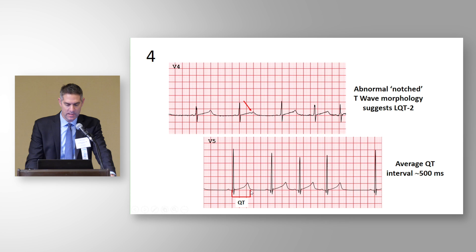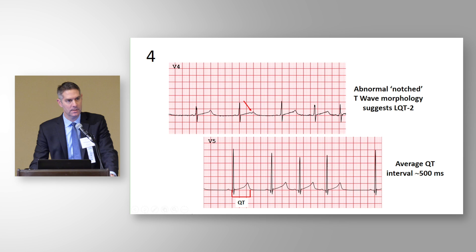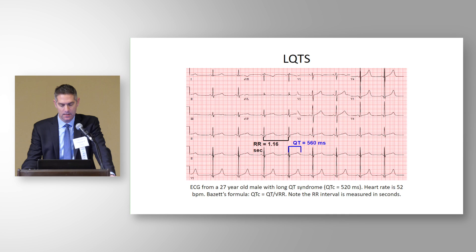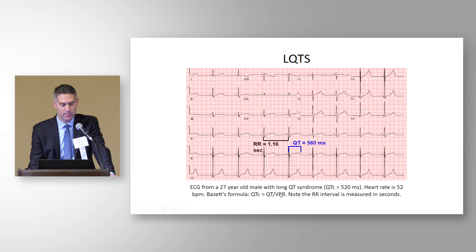In V5, finding that distinct end of the T wave to calculate the QT interval — from the beginning of the QRS to the end of the T wave — is challenging here because of the sinus arrhythmia, requiring averaging of both the RR intervals and QT intervals. Here's another example of Long QT syndrome, a 27-year-old with a QTc of about 520 milliseconds. The RR interval is calculated in seconds for the Bazett formula, and then the QT interval is measured.